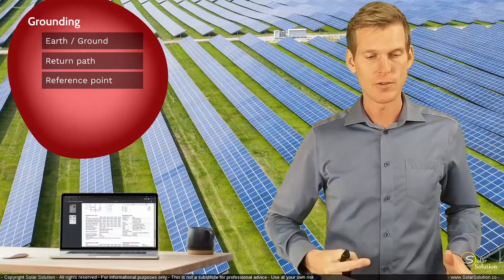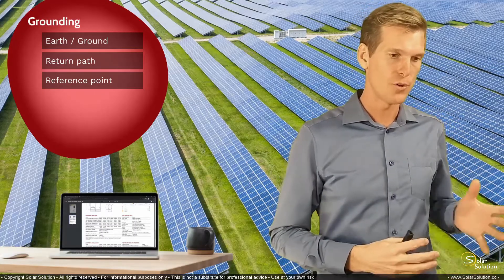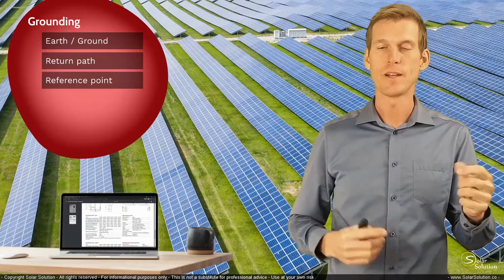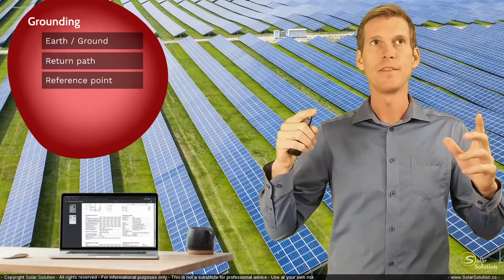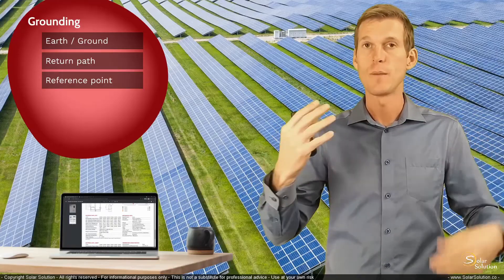So you're literally saying, okay, I'm assuming that earth is my zero, is my absolute zero. And now I'm measuring between earth and my live connection, and this is the electrical pressure which I describe in volts.